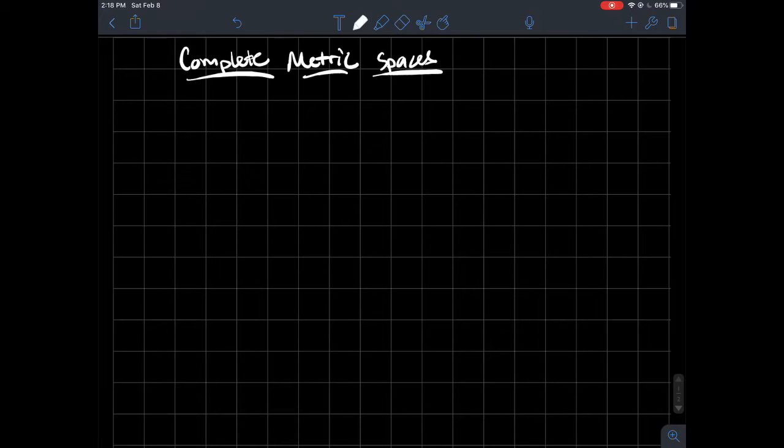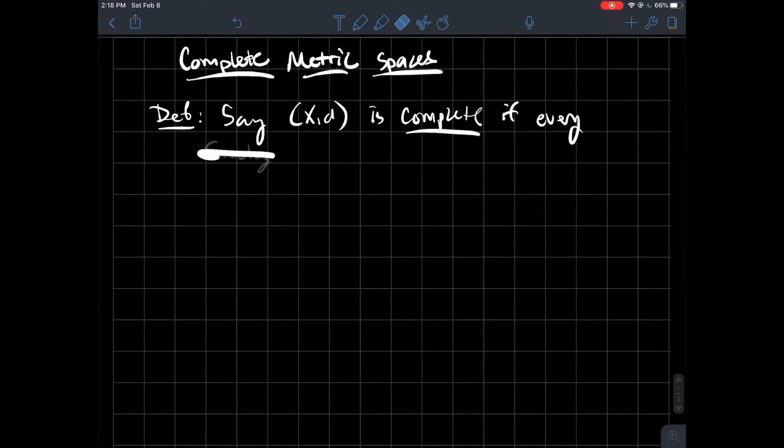I'll give you the definition right off the bat. We're going to say that your metric space (X, d) is complete if every Cauchy sequence from X has a limit in X, or converges in X to a limit in X.